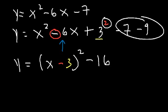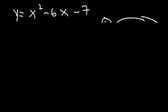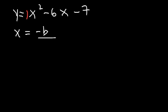So this is the answer in vertex form using the completing the square technique. But now let's see if we can get the same answer without using completing the square. What we need to do is find the coordinates of the vertex. To find the x-coordinate of the vertex, it's going to be negative b over 2a.